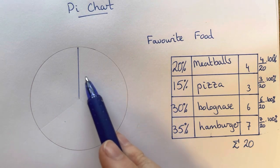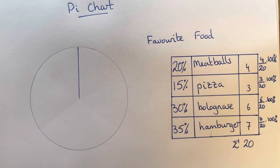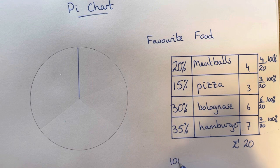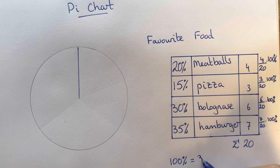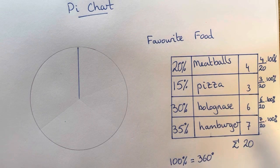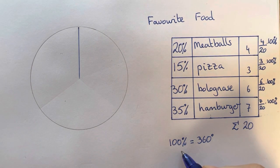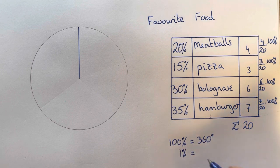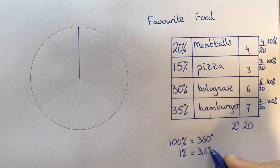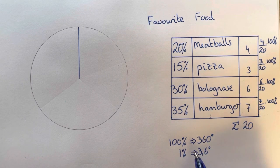So now we have the foods that people liked as a percentage, but percentage doesn't really help us very much because we still have this issue that we need to make it into a pie chart. We know now that 100 percent, the whole circle, is equal to 360 degrees of the circle, and that would mean that one percent would be equal to one hundredth of 360 degrees. So that would be equivalent to 3.6 degrees.